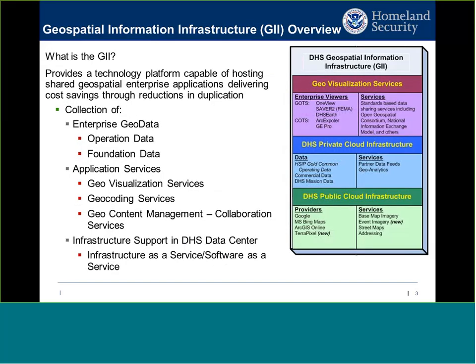What is the GII? Geospatial capabilities are a foundational element for situational awareness and play a significant role in incident management. Through David Alexander's hard work, the GMO stood up the Geospatial Information Infrastructure — a technology platform capable of hosting shared geospatial enterprise applications and delivering cost savings through reduced duplication. Think of it as three key components: a collection of enterprise geodata, application services, and infrastructure support.